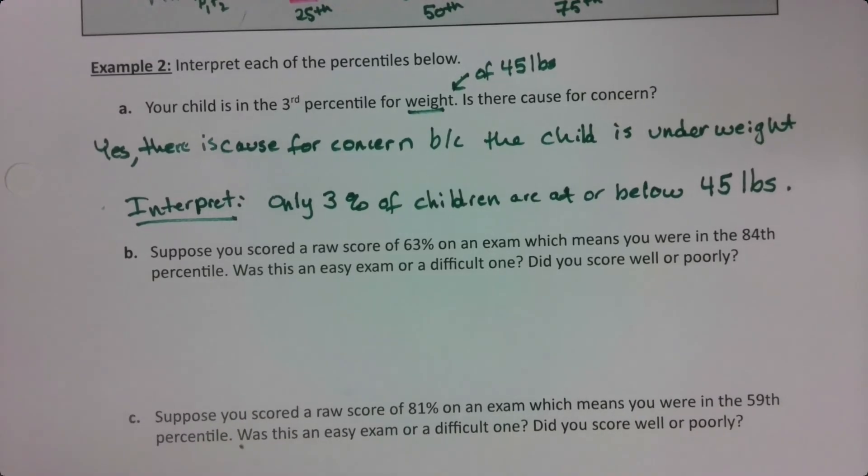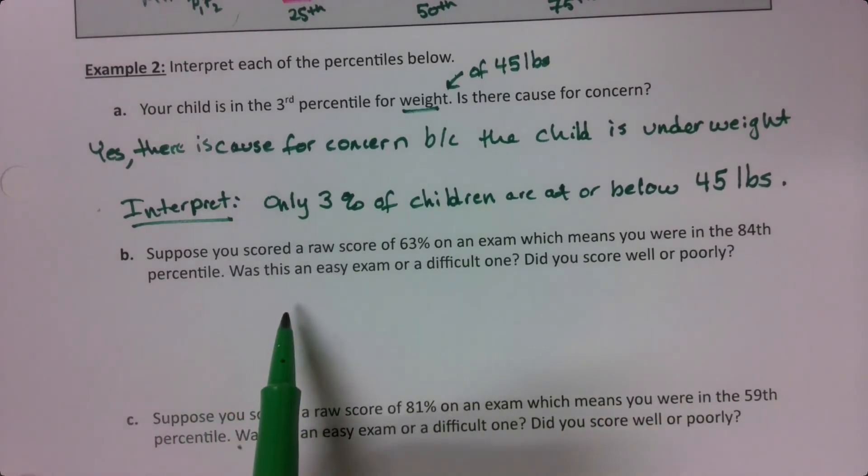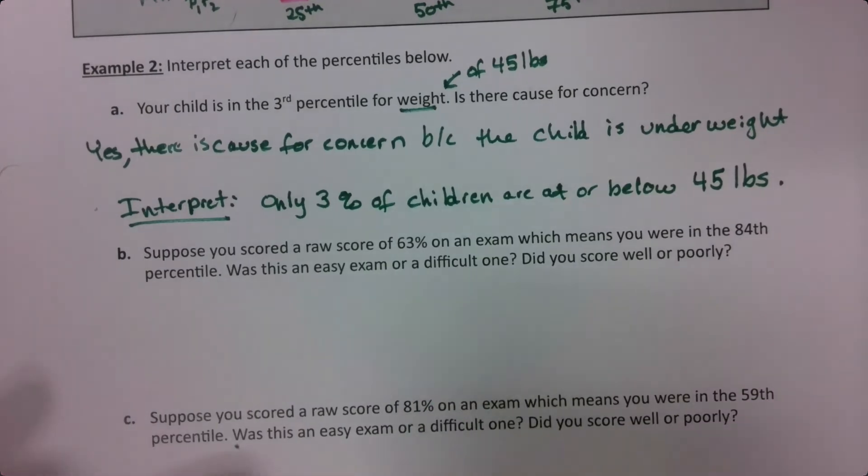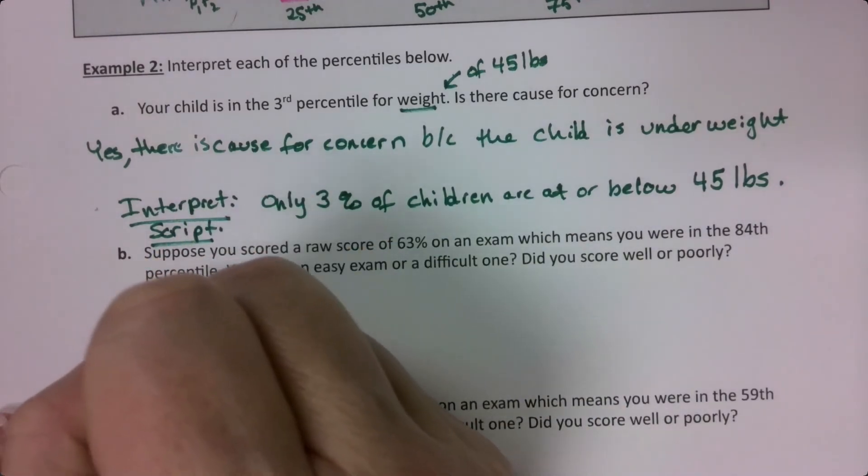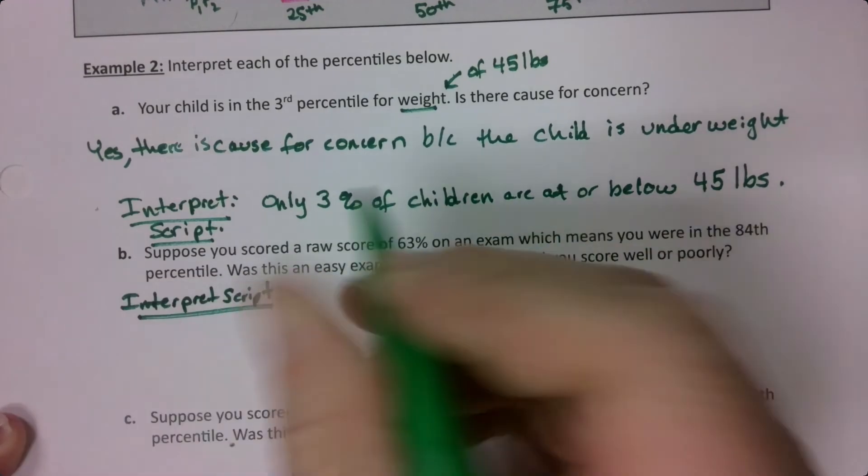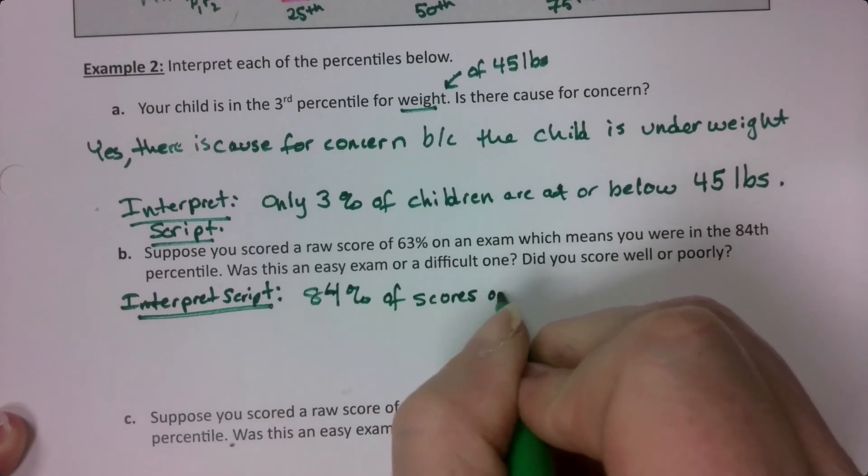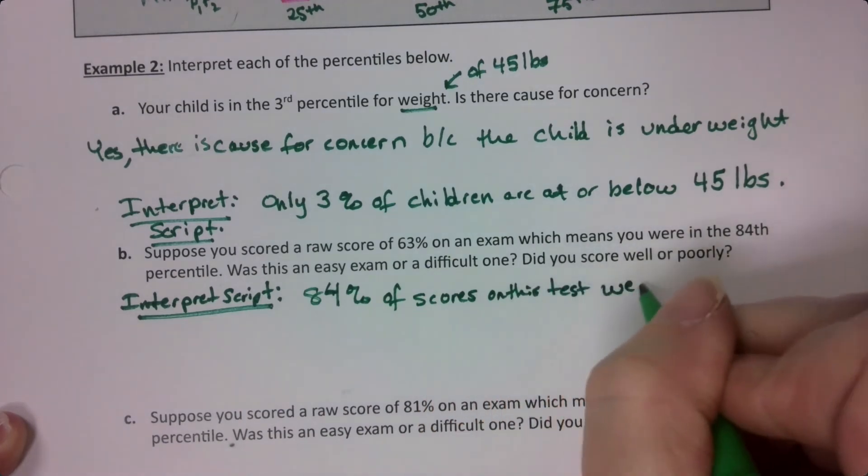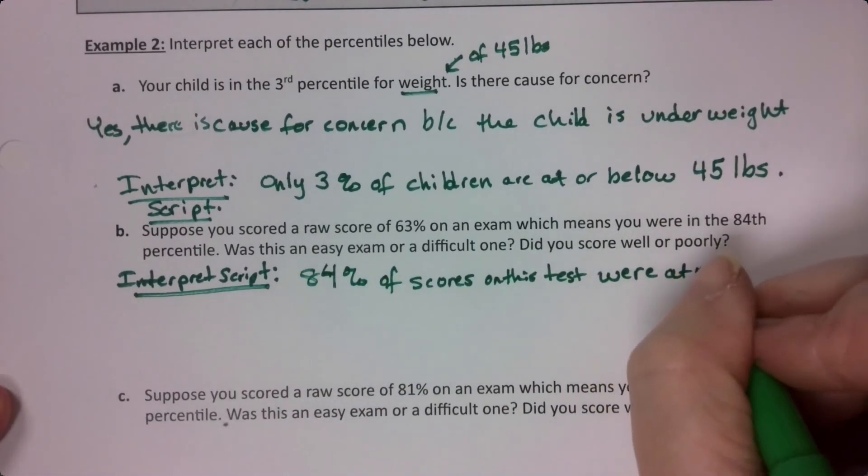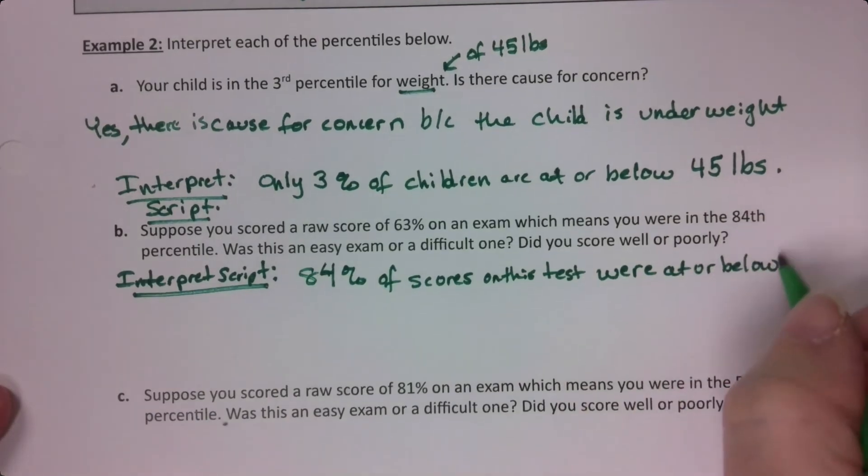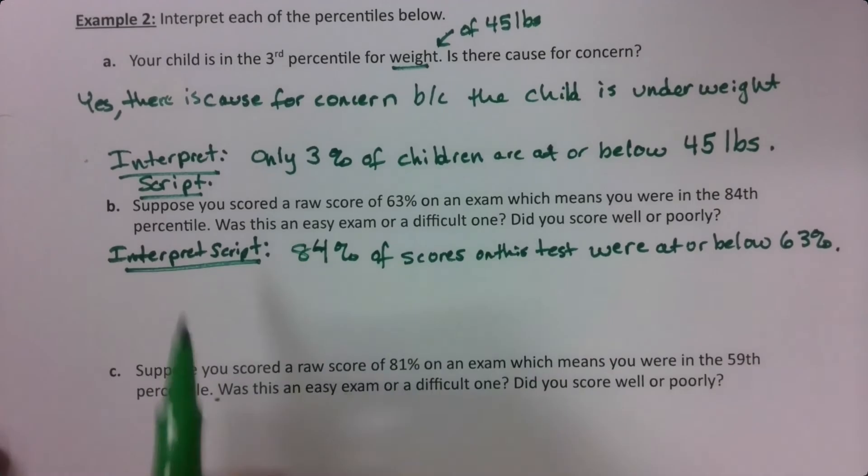Suppose you scored a raw score of 63% on an exam. That does not sound good. But then it means you're in the 84th percentile. Was this exam an easy or difficult one? And how did you score? Well, let's think about this for just a second. Let's use the interpretation script. So interpretation script, which is 84% of scores on this test, that's your context, were less than or equal to or at or below 63%. I just say at or below because it's easier to write it. It means the same thing. It means less than or equal to. They're either at 63% or below 63%. That's what that means.